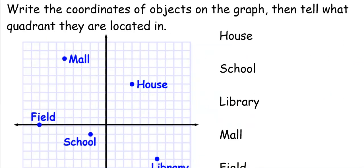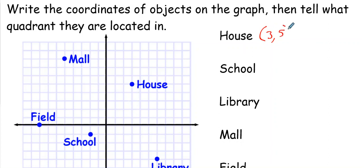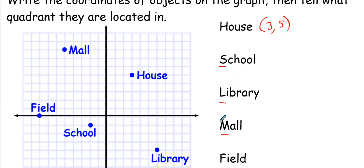The next thing we're going to do is identify places. If you look at this, you're going to tell me where things are located. I want to find the house — here's the house. Starting at the origin: one, two, three — go over three. Then up one, two, three, four, five — so the house is at (3, 5). I want you to write down the coordinates for school (S), library (L), M, and F. Pause the video and come back when you have your answers.